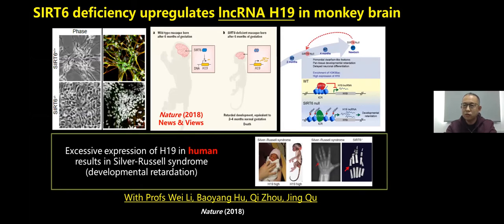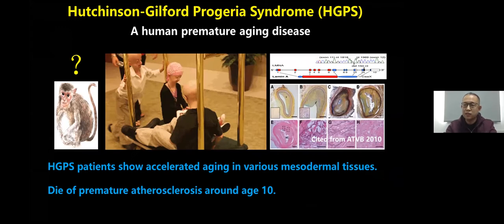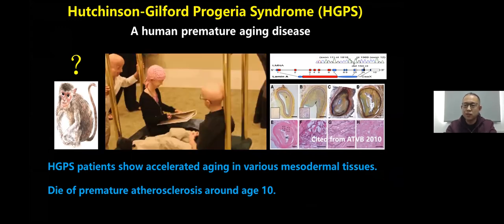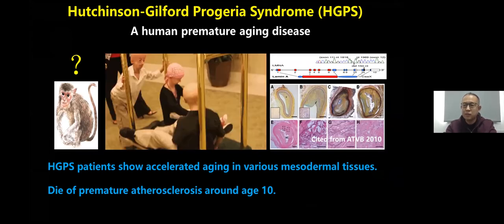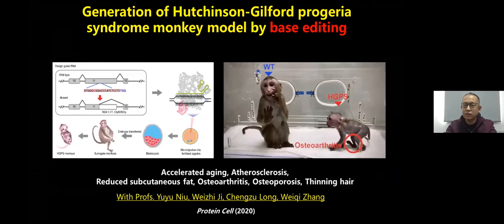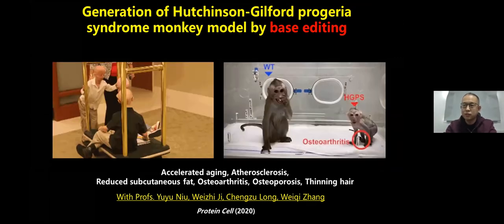We are also interested in whether primate animal models can be used to study pathological aging. HGPS is a premature aging disease caused by a single-point mutation of the Lamin A gene. HGPS patients undergo accelerated aging and die of atherosclerosis. In collaboration with Professor Ji Wei-Zhi's lab, we generated HGPS monkeys through base editing. The monkeys show signs of accelerated aging, including atherosclerosis, and also show premature cellular senescence, just like HGPS patients.